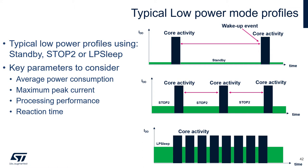For example, standby mode fits a profile where average consumption must be very low, reaction time does not need to be quick, and the time between wake-up cycles is long. On the other hand, low-power sleep could be a good idea where reaction time has to be quick and there is a short period between wake-up cycles. A good trade-off between the two, with low average consumption and short reaction time, is STOP2.